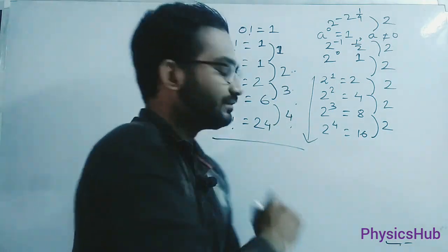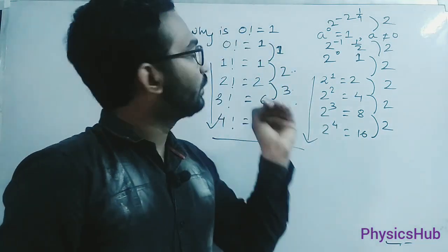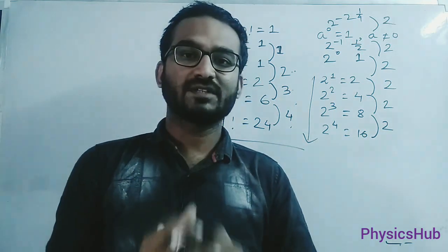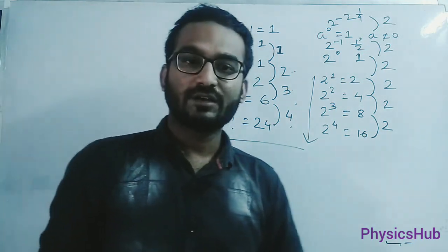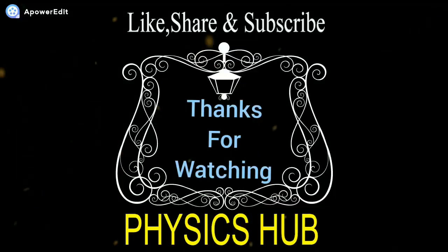So this is how you get 0 factorial equals to 1. If you enjoyed it, please put a thumbs up and subscribe the channel. And don't forget to press the bell icon. Finally, thanks for watching. I'll see you next time.